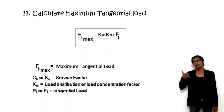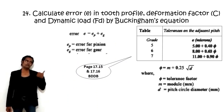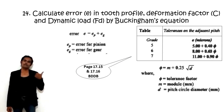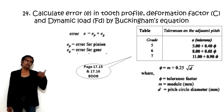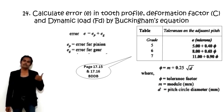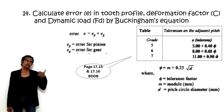Step 13: Calculate the maximum tangential load = service factor × load distribution factor × tangential load. Step 14: Calculate error. First compute the tolerance factor = M + 0.25√(pitch circle diameter), then look up the grade — for example, grade 7 gives E = 11 + 0.90 × tolerance factor (in microns). Do this for both EP (pinion) and EG (gear), then total error E = EP + EG. Convert from microns to mm by multiplying by 10⁻³. Formulas are on pages 17.15 and 17.16 of the Bhandari design data book.